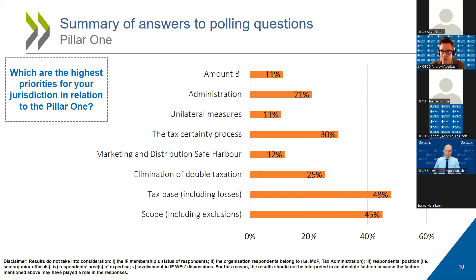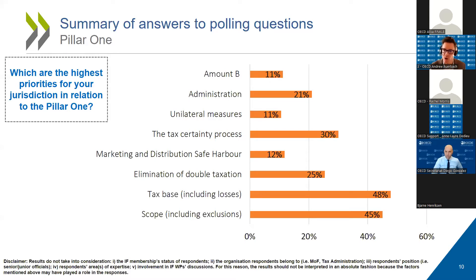I wanted to give you a little idea of some of their priorities. On Pillar 1, we asked people what their highest priorities for the jurisdiction were. Questions about the tax base and the scope were very high on people's minds — that means figuring out who's in Pillar 1, which companies' profits are going to get allocated, and how you determine how much profit has to be reallocated. Those are key questions for them. These all form building blocks of both Amount A and Amount B.